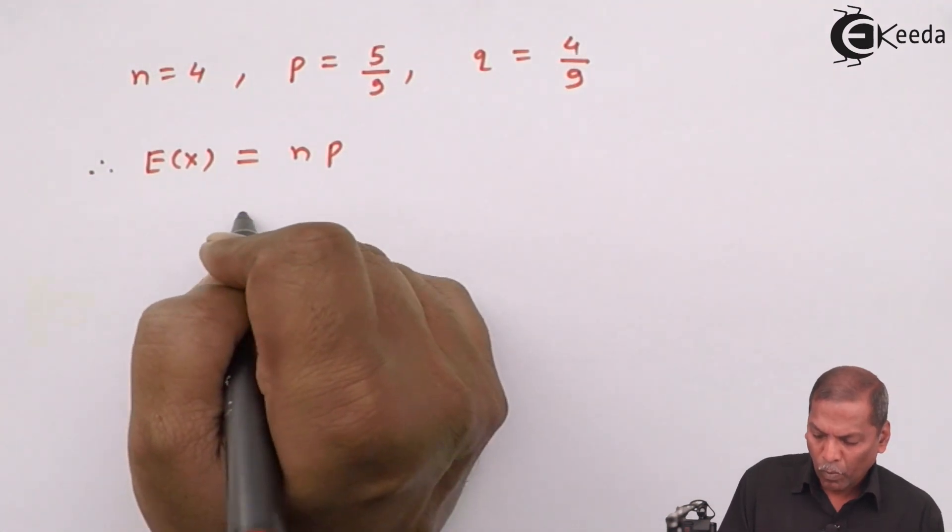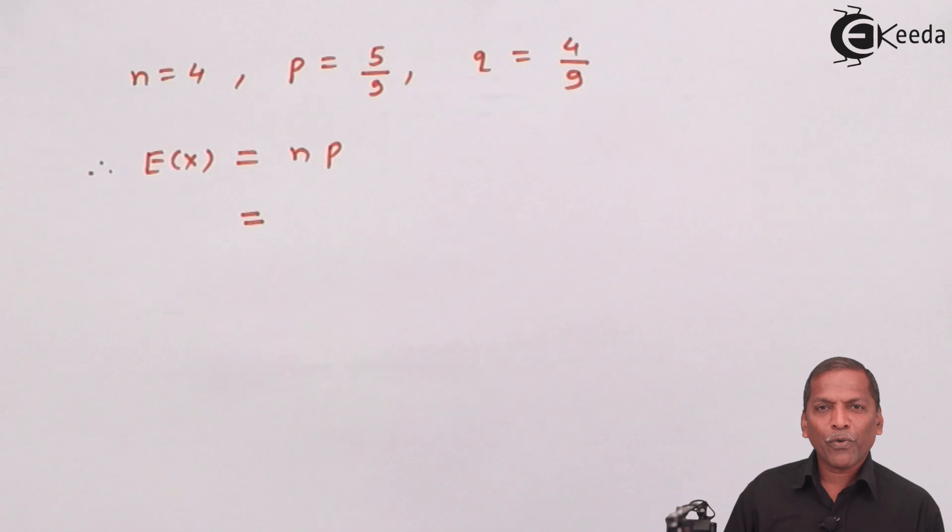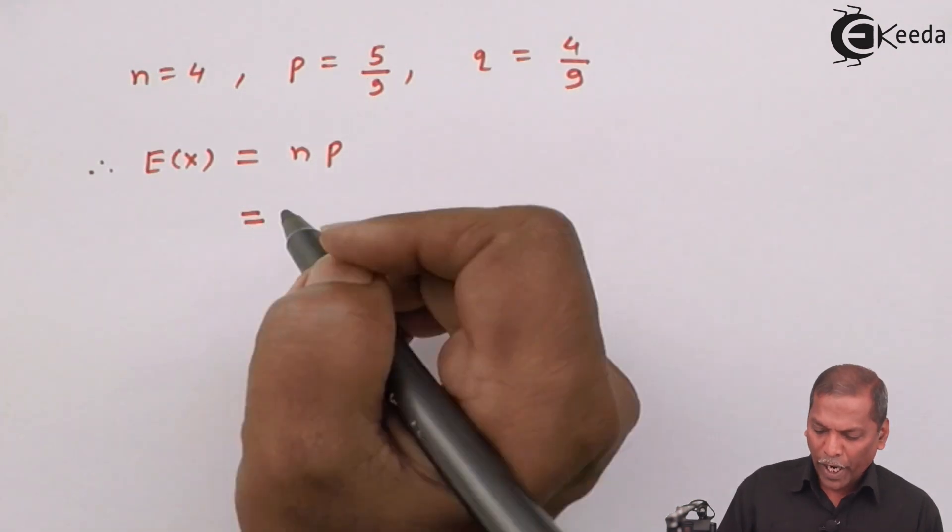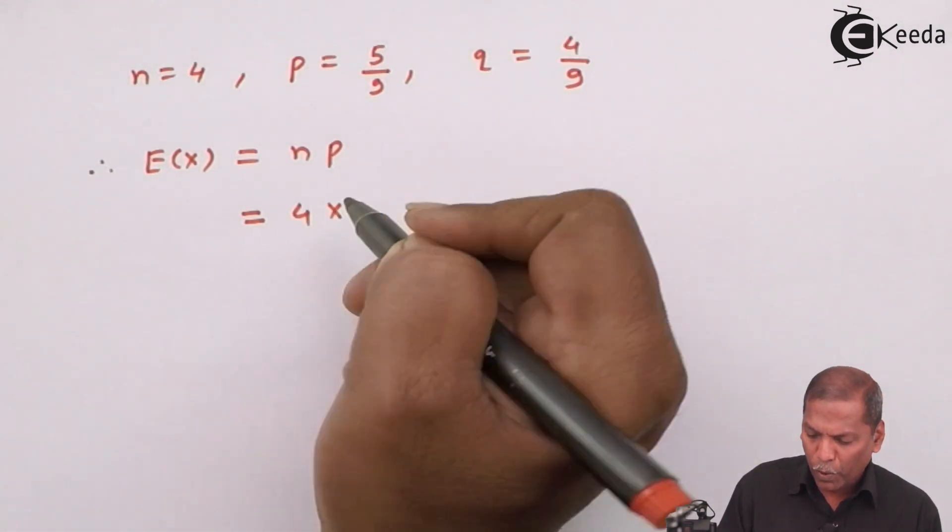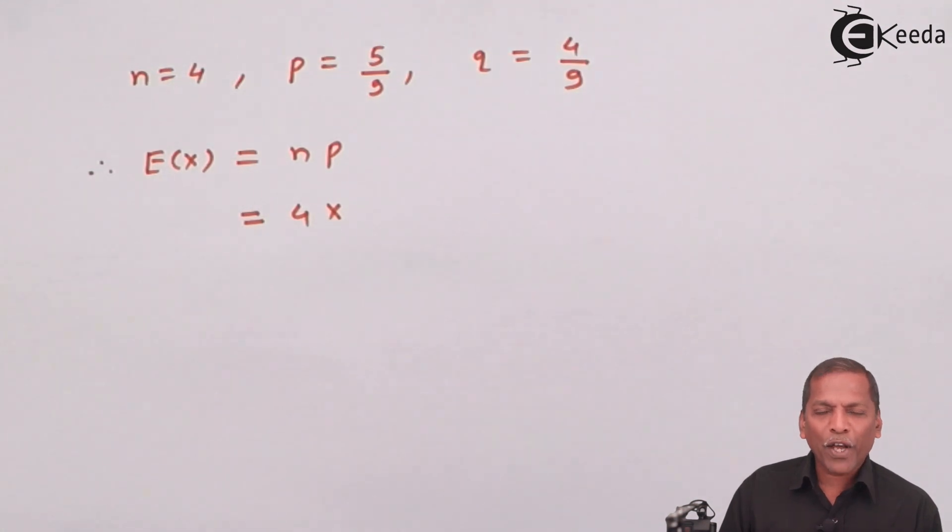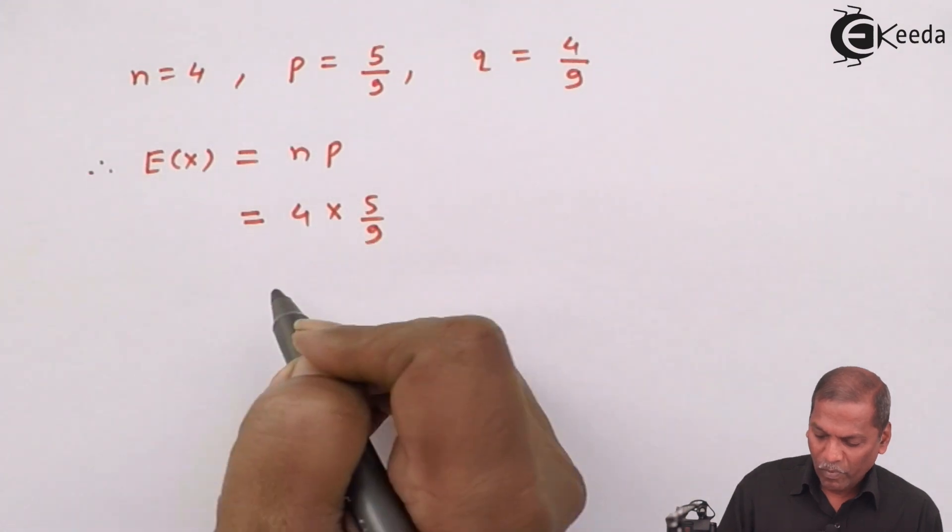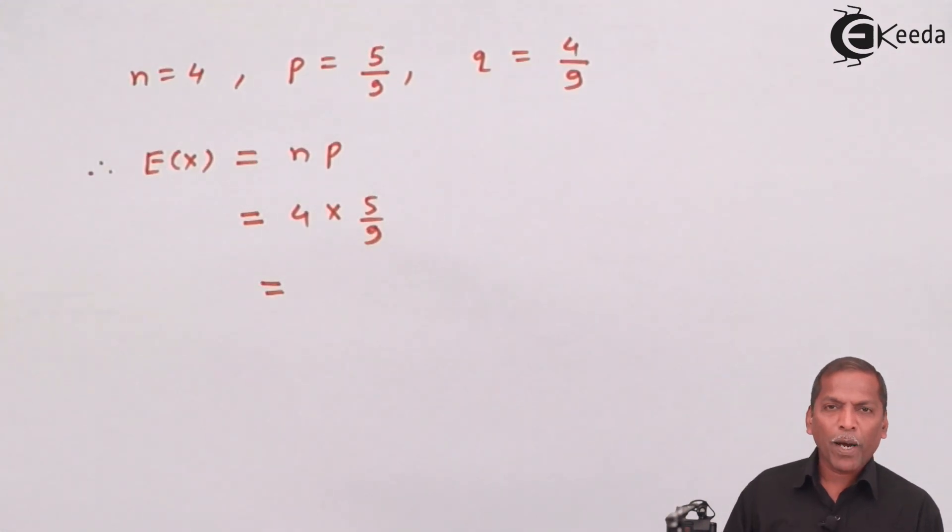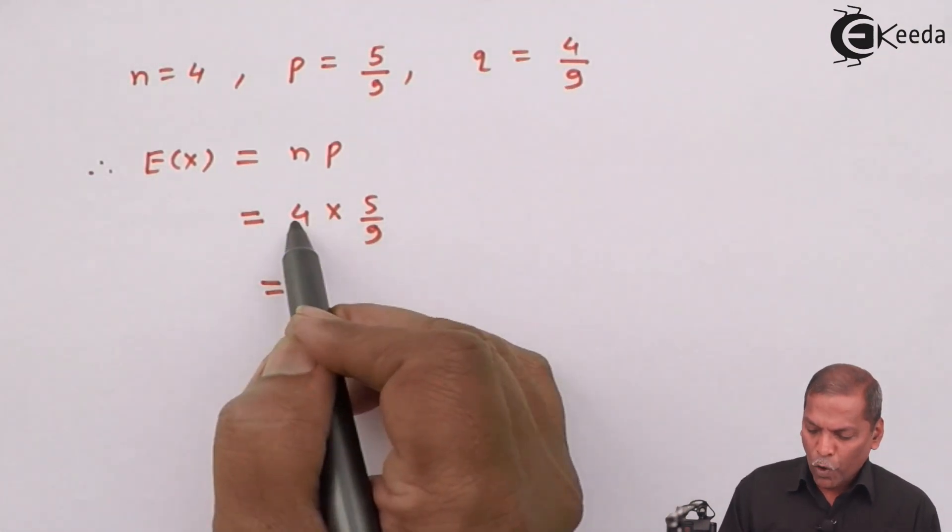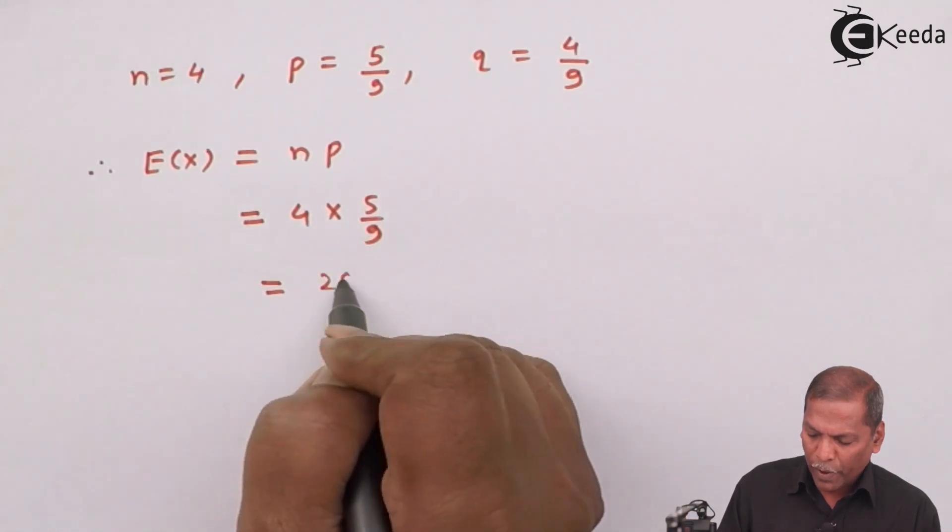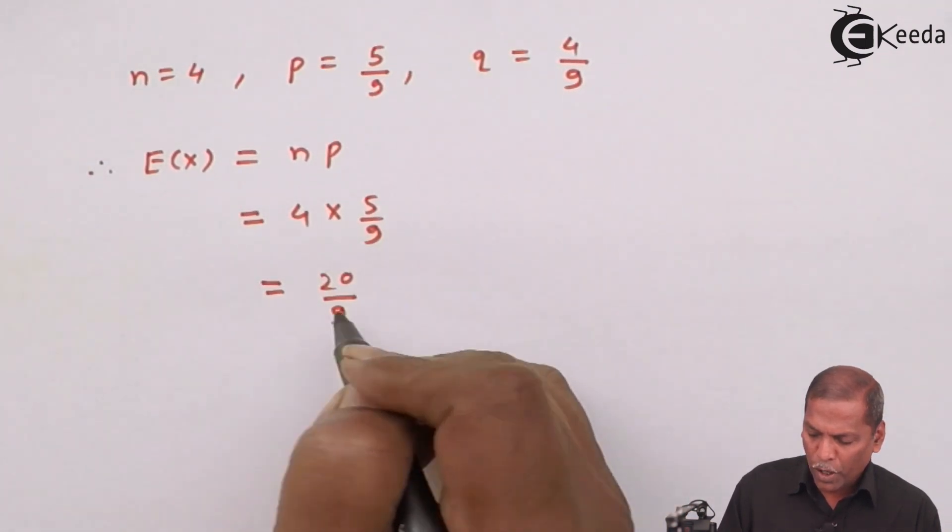That equal to, now for N, we write 4 into, for P, we substitute 5 upon 9. So, on multiplying, we get 4 into 5, that is 20 upon 9.